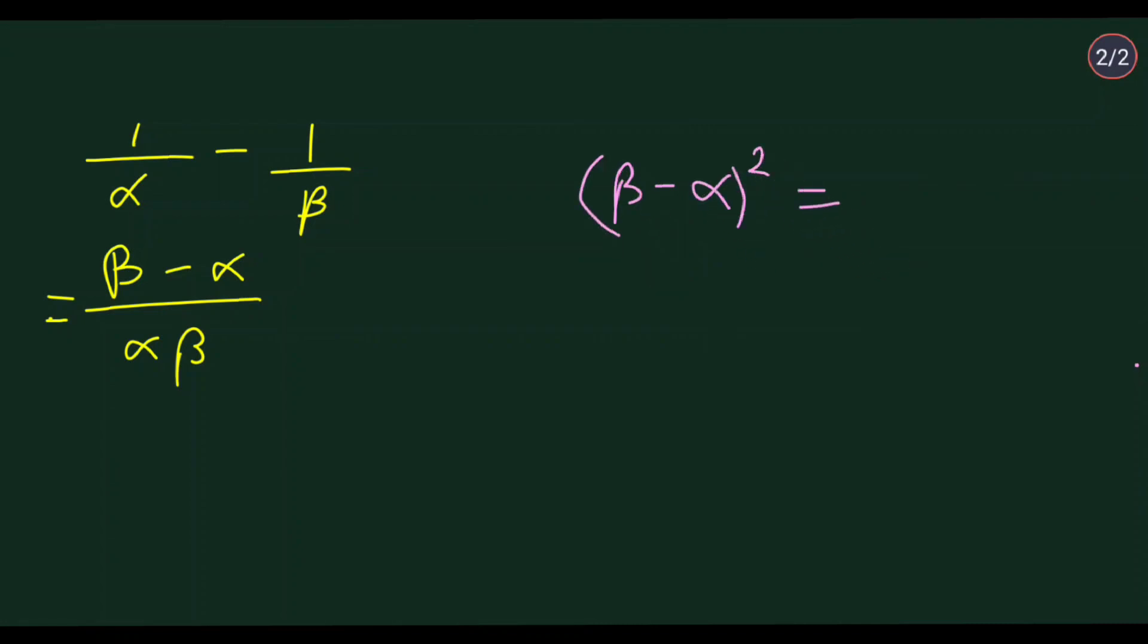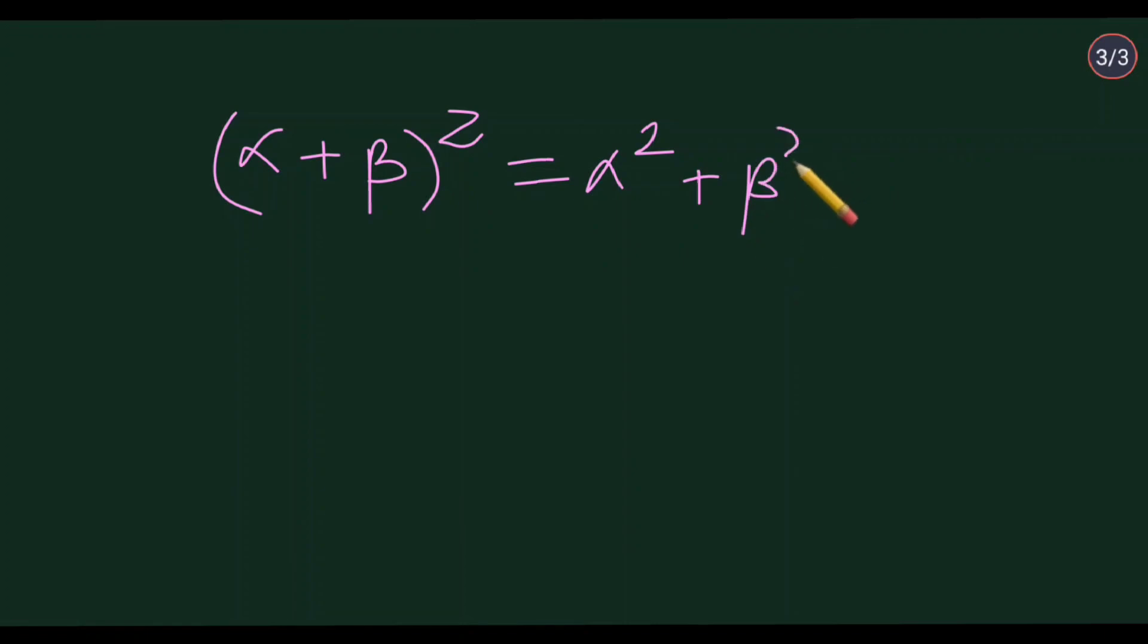If we do the squaring, you will get beta square plus alpha square minus 2 alpha beta. Again, if we do squaring, alpha beta we know, but we don't know alpha square plus beta square. So we have to find this in another way.